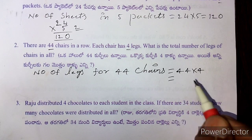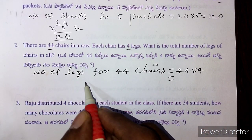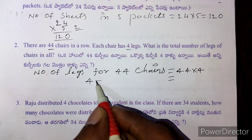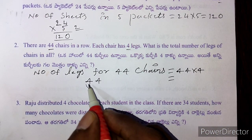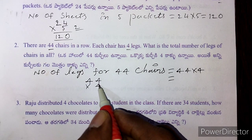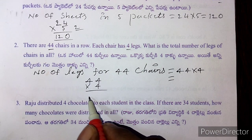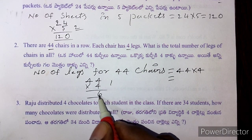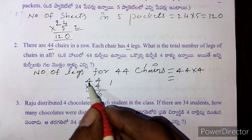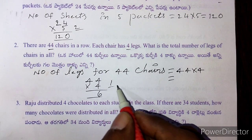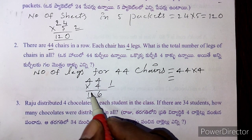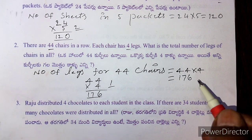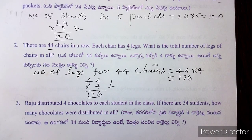Now, the total number is 44 into 4. Four fours are sixteen. Sixteen plus one is seventeen, and the total is 176.